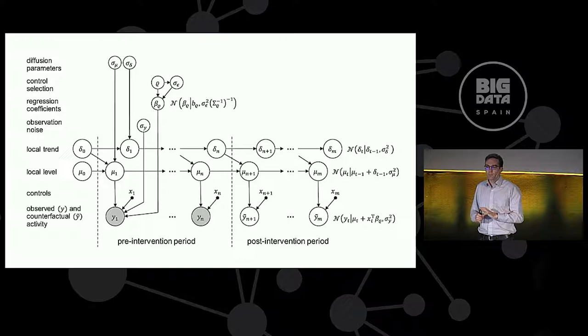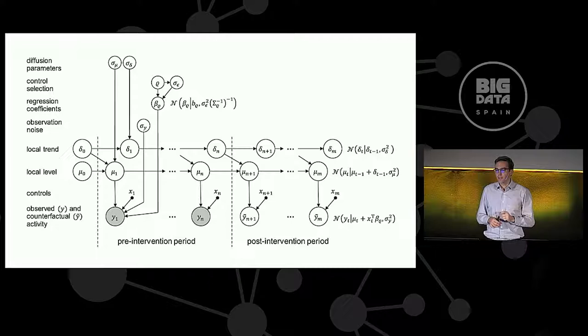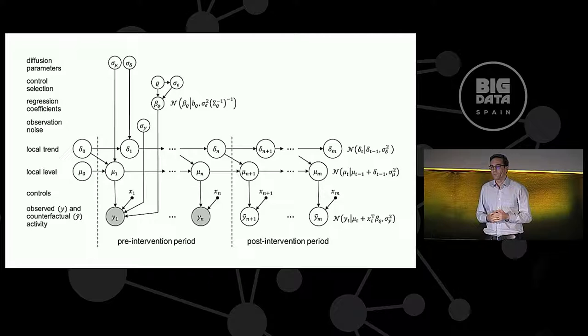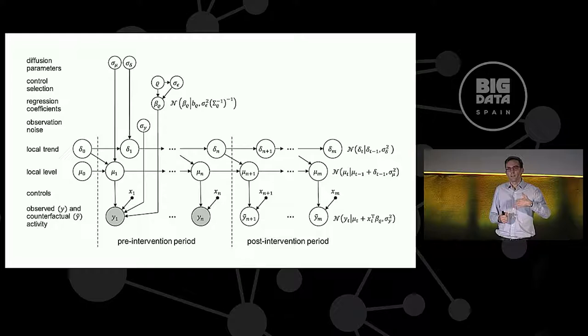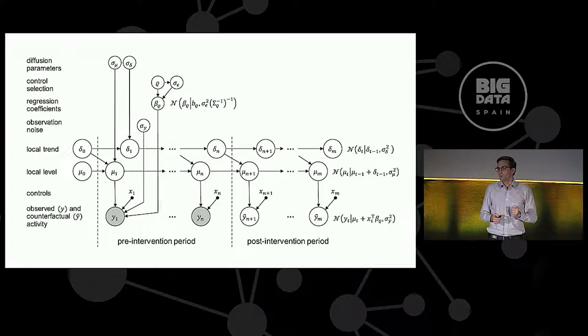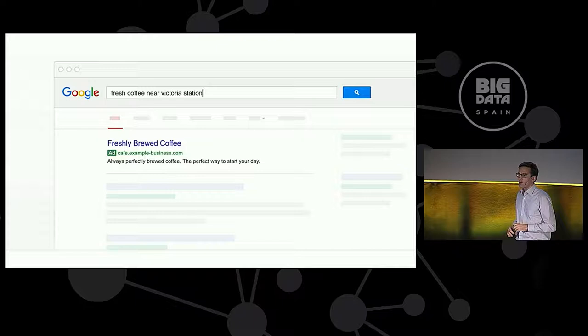As I mentioned, you can use any model here. And the particular modeling approach that we prefer in this case is a family of models known as Bayesian structural time series models. But this could be any other model. So the model I've used here on the previous slide is what you see here as a graphical model representation. Distinguishing between observed data and latent states. This is the kind of model that's implemented in the causal impact tool. But you could use any other model as well. Now let's take a look at a concrete example.